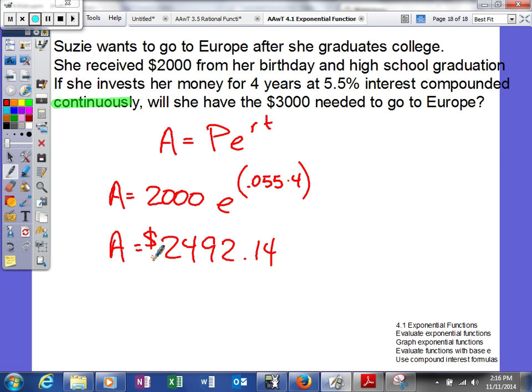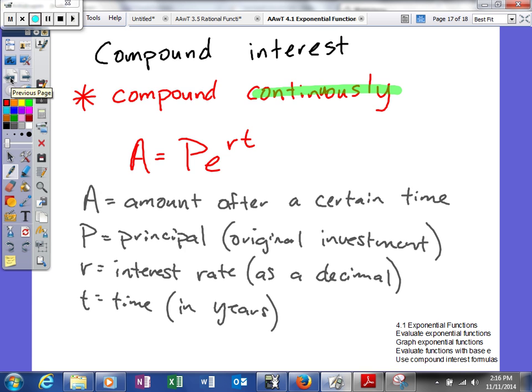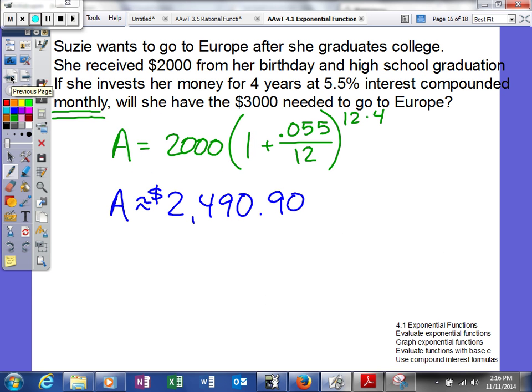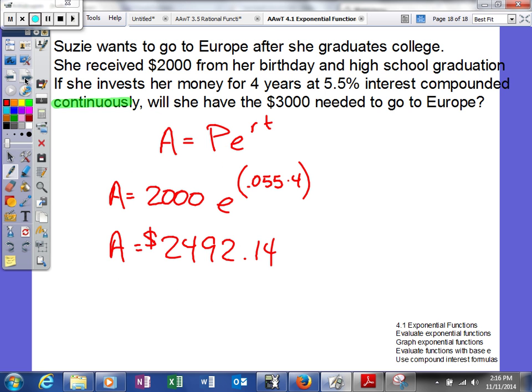Now, it may not look like that much of a difference. You can see in our last example, she had $2,490.90. So it's just a little bit more than a dollar, probably a dollar and 24 cents or something like that. But we're dealing with smaller numbers.